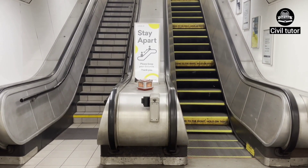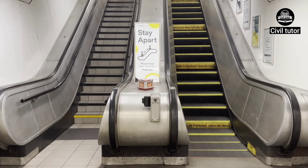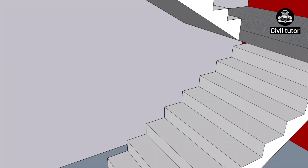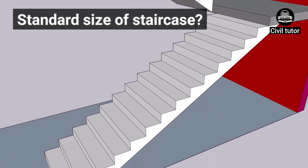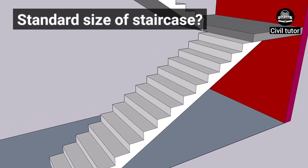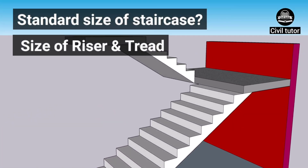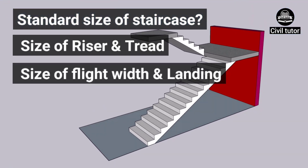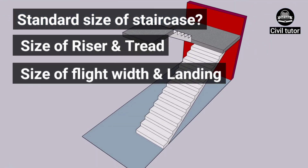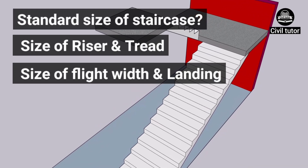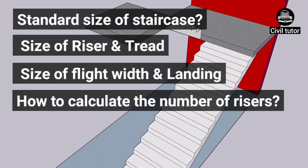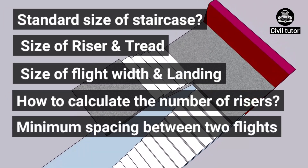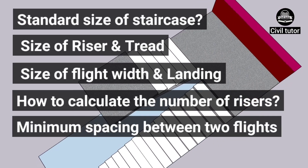In this lecture, I am going to discuss some important details regarding staircases, including what should be the standard size of a staircase, the maximum and minimum standard sizes of risers and treads, the maximum and minimum size of flight width and landing. I am also going to discuss how to calculate the number of risers and what should be the minimum spacing between two flights in a staircase.